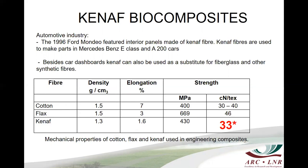This table summarizes the mechanical properties of cotton, flax and Kenaf used in engineering composites. You can see that Kenaf should have a strength of 33 centinewtons per tex to be of acceptable quality for the production of biocomposites.